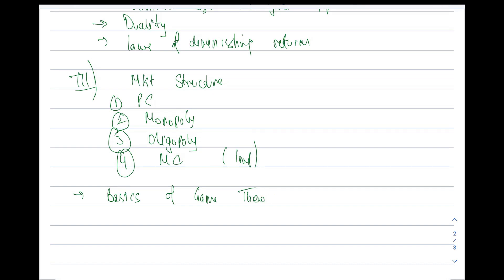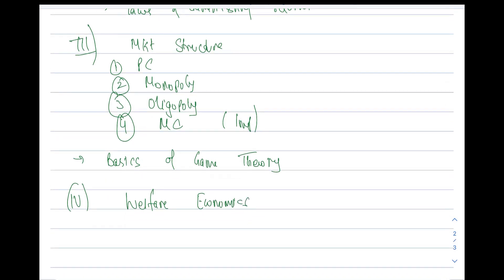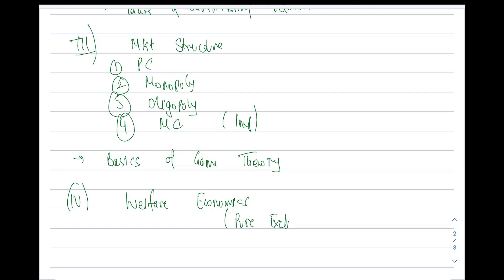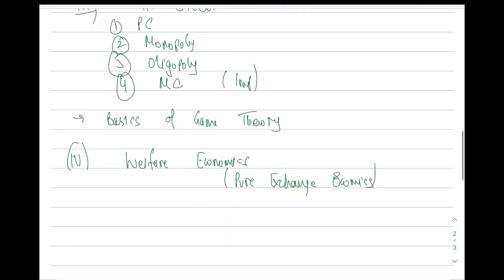After that we will go to the next unit, which will be welfare economics. There we will be covering all those things which are important for the exam, including the topic of pure exchange — from the last two years we are getting a numerical on this topic. Apart from that, we will also be covering externalities, public goods, and all those related topics.